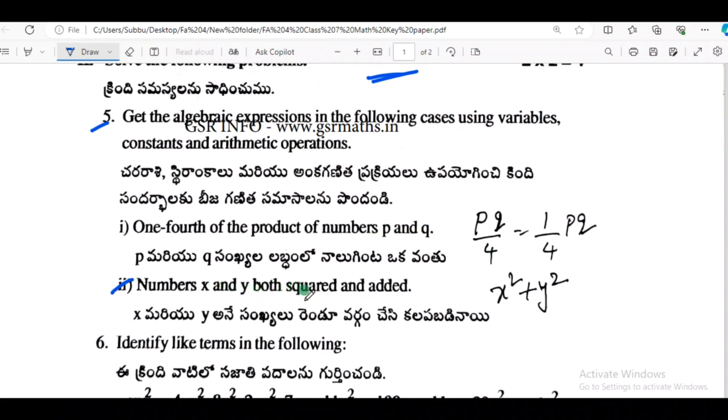Second one, numbers x and y both squared and added. So x and y, x squared and y squared, add both: x squared plus y squared.